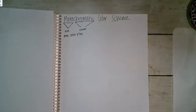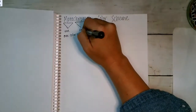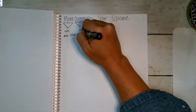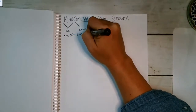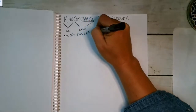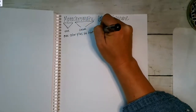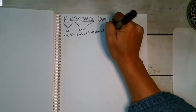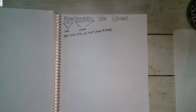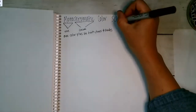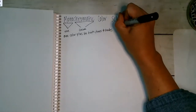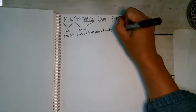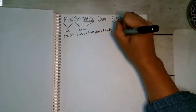And chromatic means color. So that's what monochromatic means — one color plus something. One color plus its tints, tones, and shades. And we're going to define a tint, a tone, and a shade.